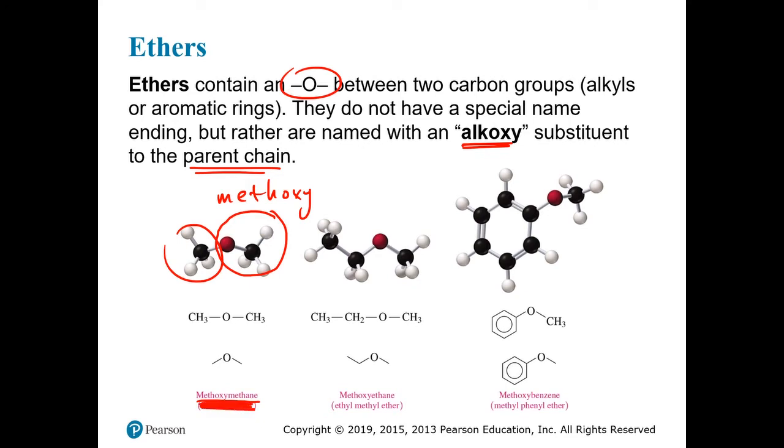With ethers, again, we're not looking for the common names, so you don't need to memorize any of those. Those are often given in parentheses in these slides, but you can just ignore them. You want to be able to identify the parent chain and the alkoxy substituent. In this middle example, we have a methoxy group, again, a single carbon bonded through an oxygen bridge, and the chain that it's connected to is an ethyl group, or ethane. So, this is methoxyethane.